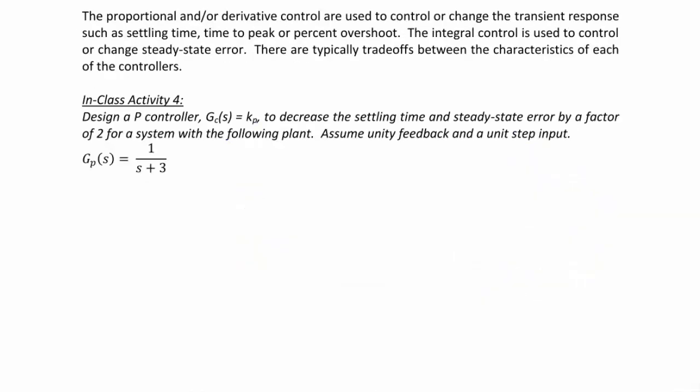The proportional and/or derivative control is used to control or change the transient response of a system, such as the settling time, time to peak, or percent overshoot. The integral control is used to control or change the steady state error. There are typically tradeoffs between the characteristics of each of the controllers. In Class Activity 4, design a proportional controller GC(S) equal to KP to decrease the settling time and steady state error by a factor of two for a system with the following plant, assuming unity feedback and a unit step input.